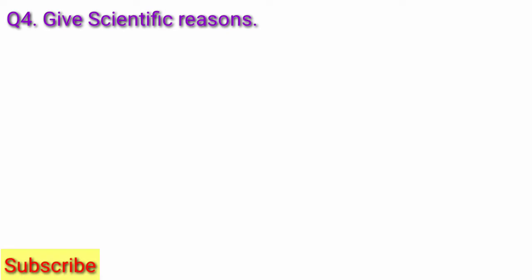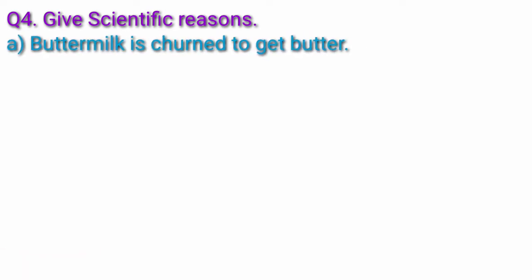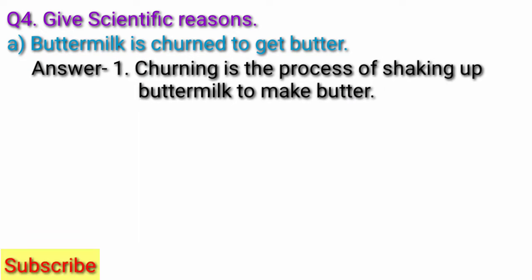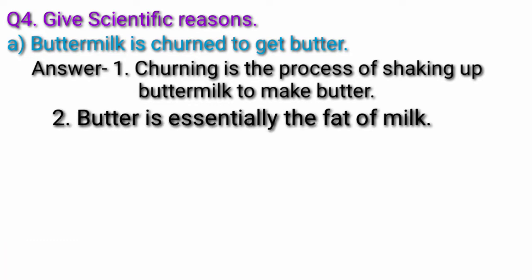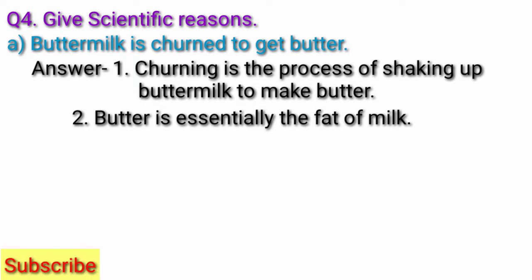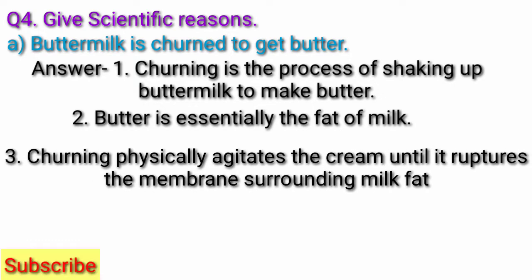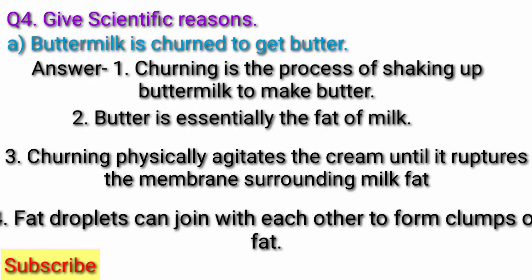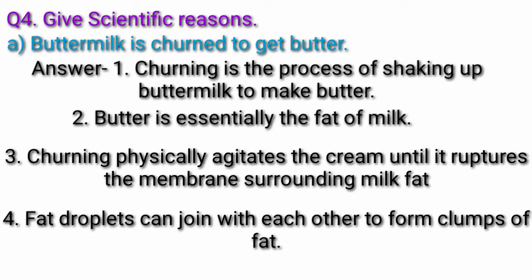Question 4: Give scientific reasons. Question A: Buttermilk is churned to get butter. Answer. Churning is the process of shaking up buttermilk to make butter. Butter is essentially the fat of milk. Churning physically agitates the cream until it ruptures the membranes surrounding milk fat, and fat droplets can join with each other to form clumps of fat.